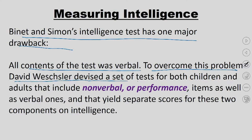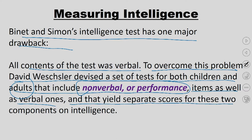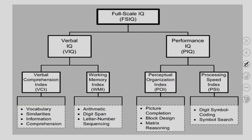To overcome this problem, David Wechsler devised a set of tests for both children and adults that included non-verbal or performance items. Most questions in the Binet-Simon test were verbal items, making it very difficult to assess young children without verbal ability, or adults who had never gone to school. Wechsler defined a test which had non-verbal performance items as well as verbal ones, and that yielded separate scores for these two components of intelligence — the Wechsler Adult Intelligence Scale.